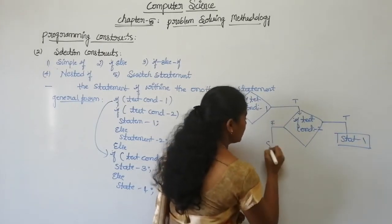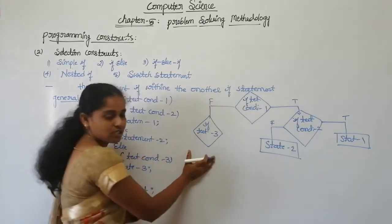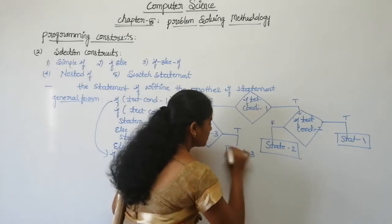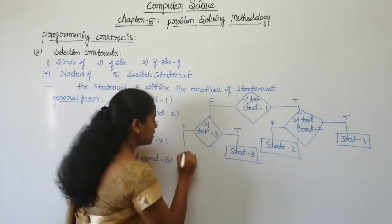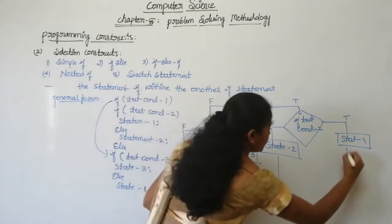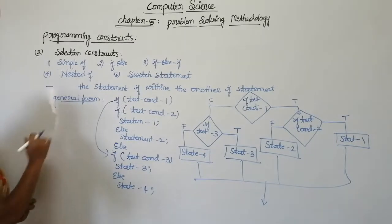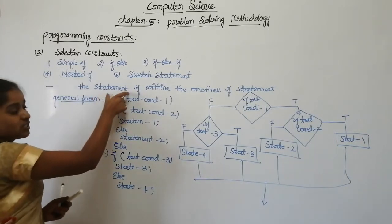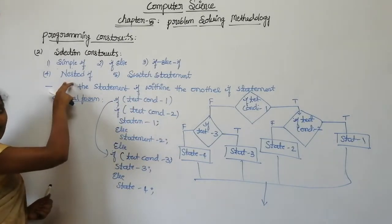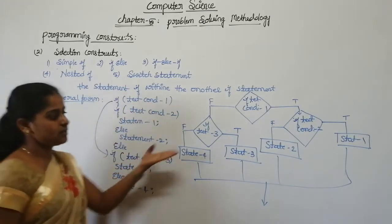If test condition two is false, then statement two executes. If test condition one is false, then test condition three is evaluated. If test condition three is true, statement three executes; if false, statement four executes. So this is the flowchart for nested if.